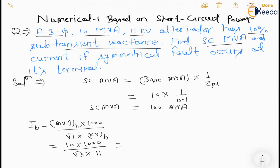Now short circuit current will be equal to IB into 1 upon ZPU. IB is equal to 0.5248 into 1 upon 0.1. So this will become short circuit current is equal to 5.2486 kilo ampere.